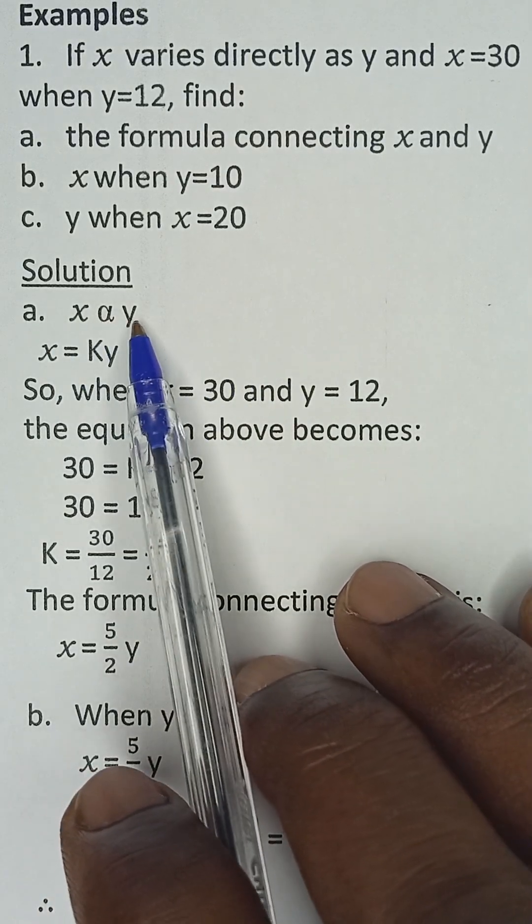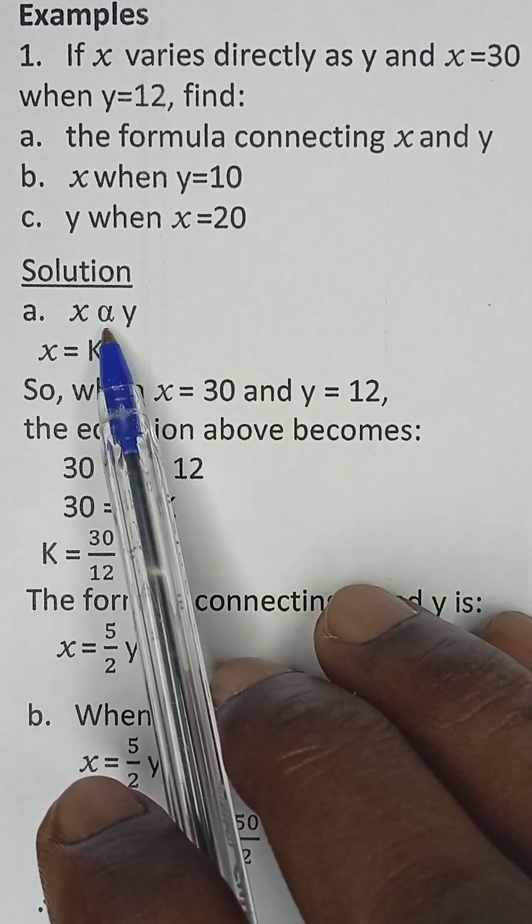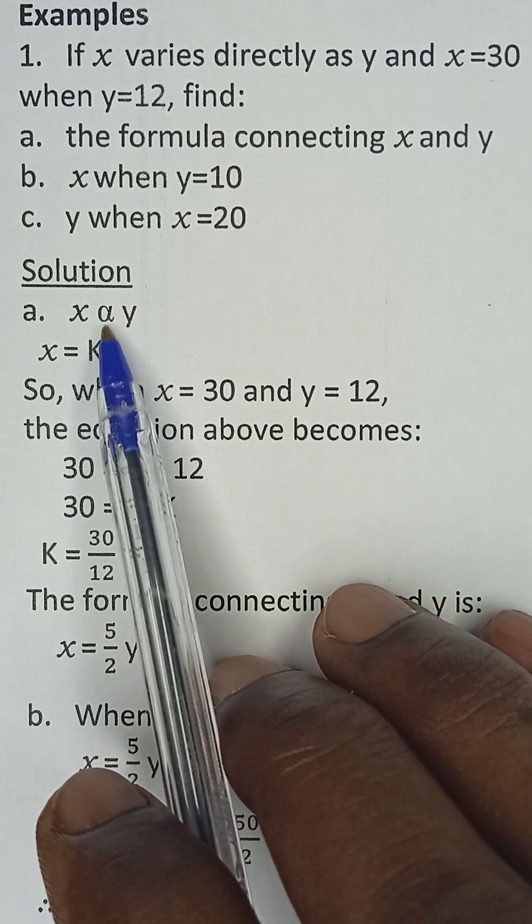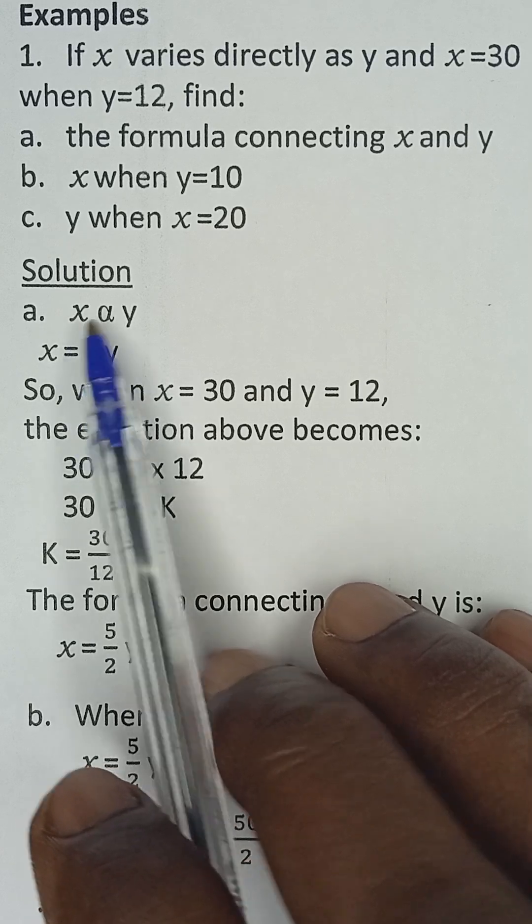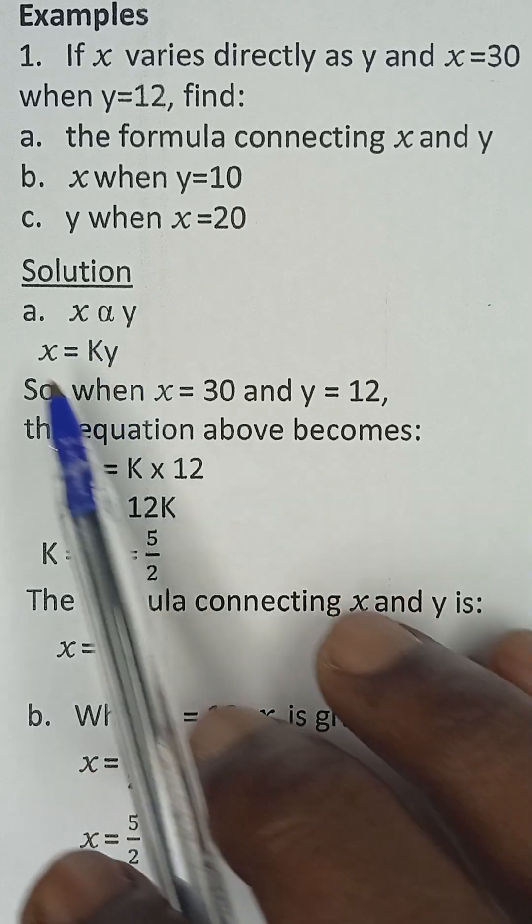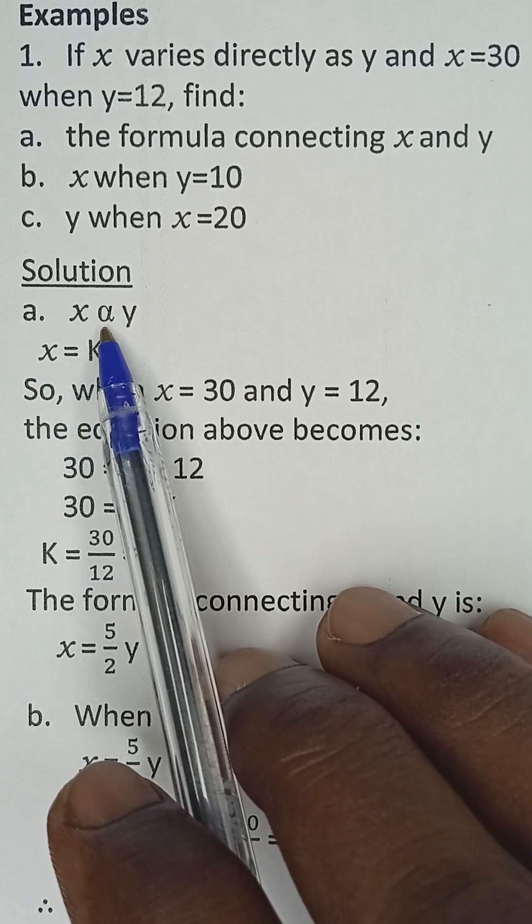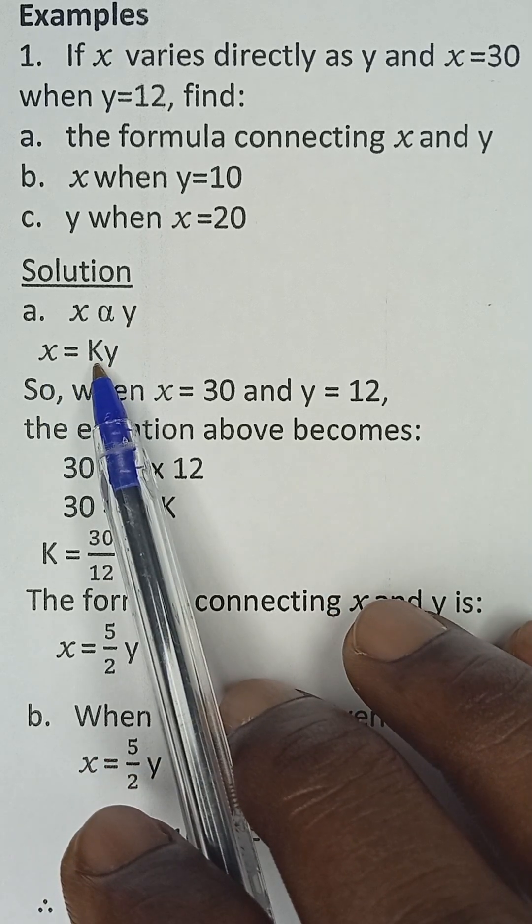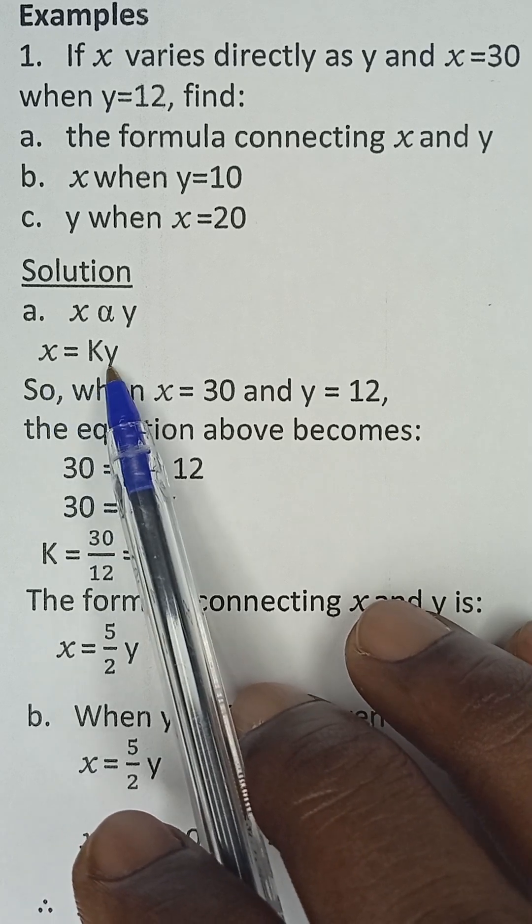So the question says, if X varies directly as Y, this is how to write it. X varies - this is a symbol for varies directly now, or variation or proportionality sign. So X varies or X is proportional to Y. So X is equal to, when you change this sign to equality sign, you introduce a constant K. So X equals KY.